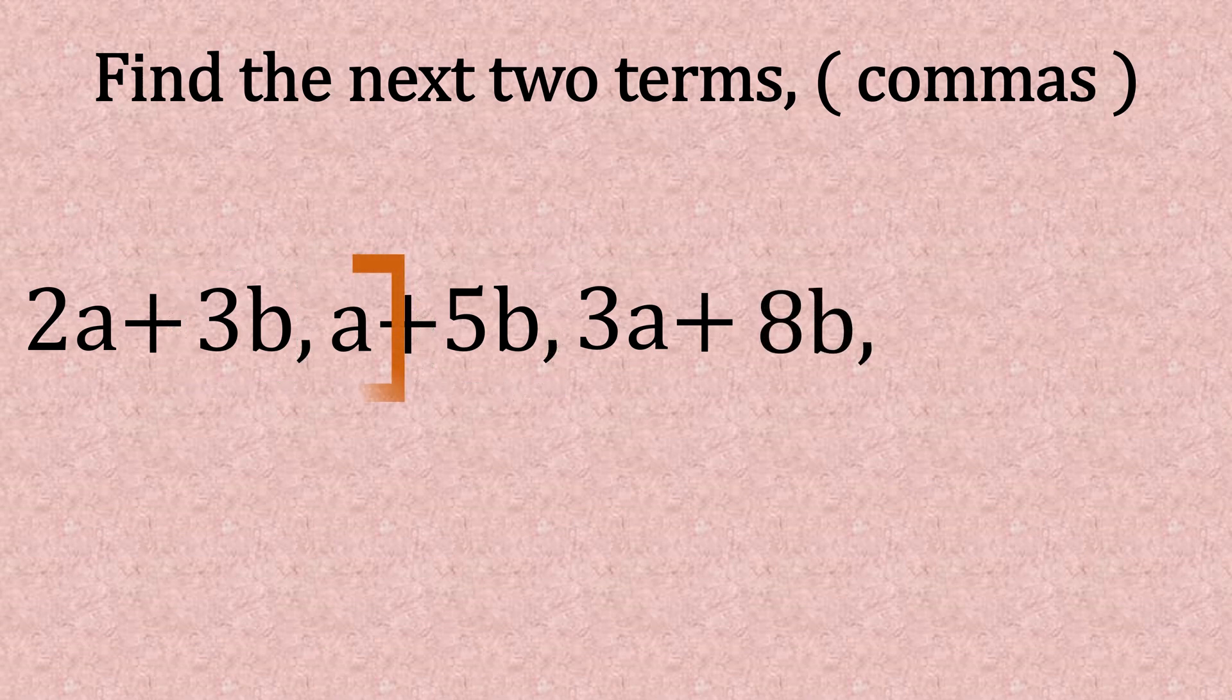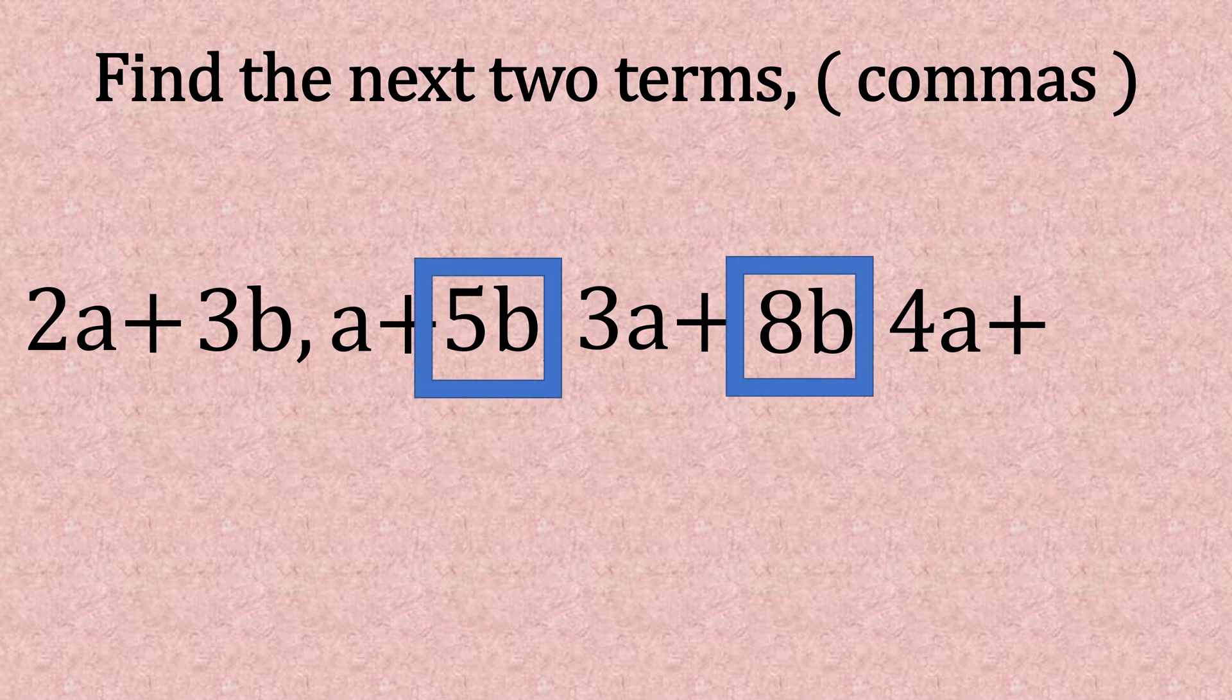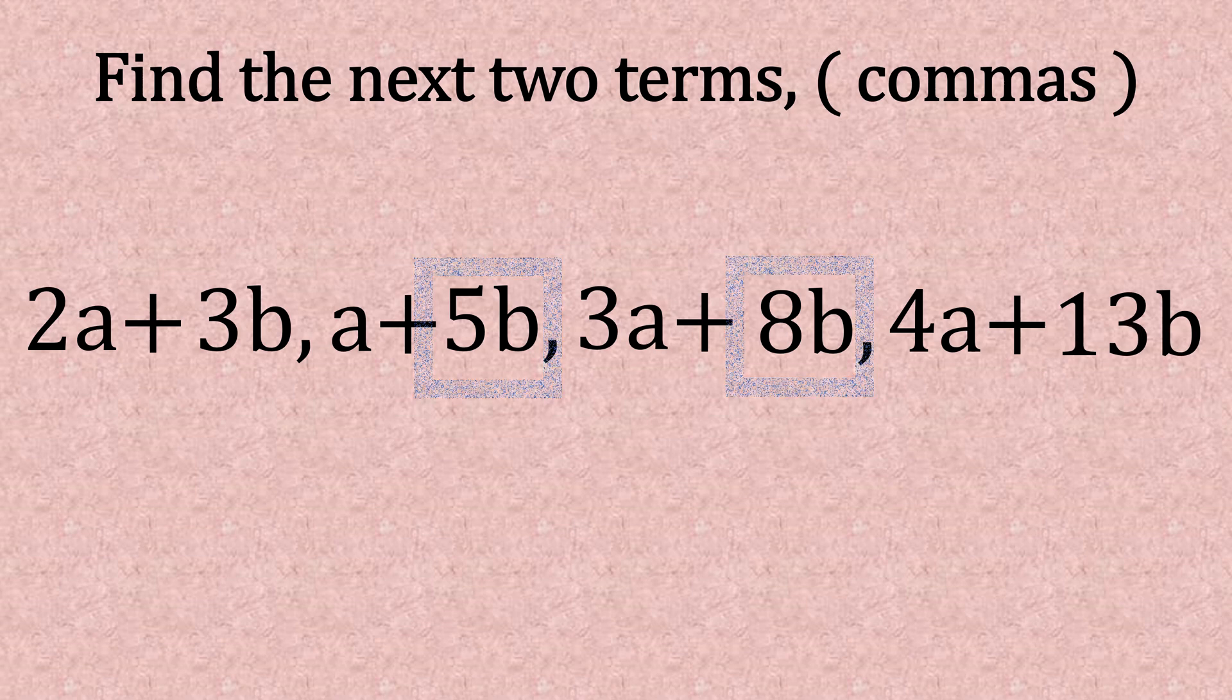Put the comma there and go for the next term. a plus 3a gives 4a. And then 5b and 8b will give us 13b. So the next two terms are 3a plus 8b and 4a plus 13b.